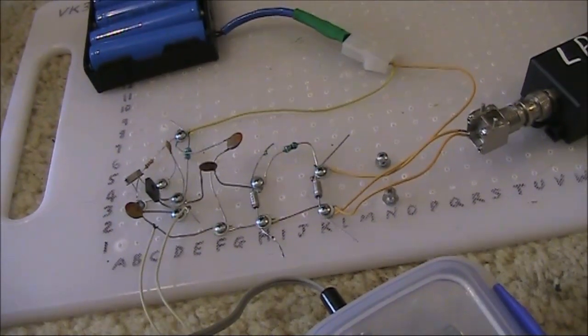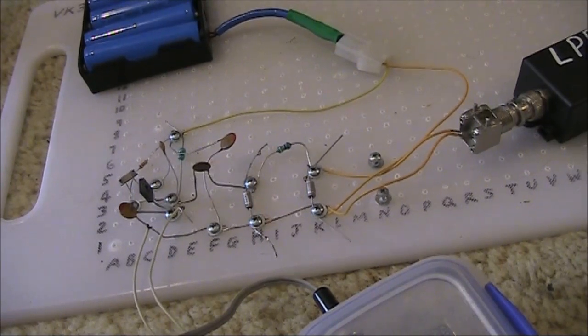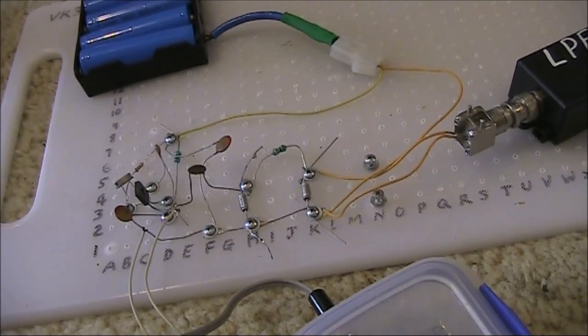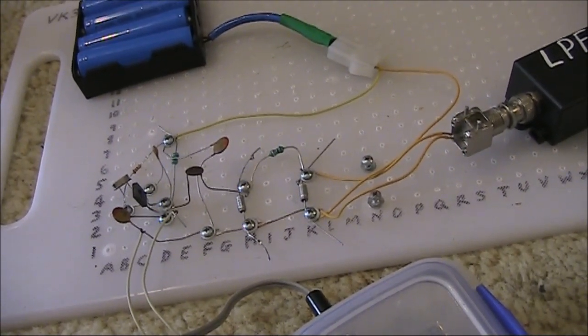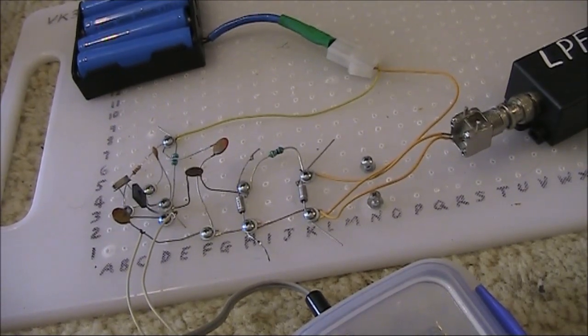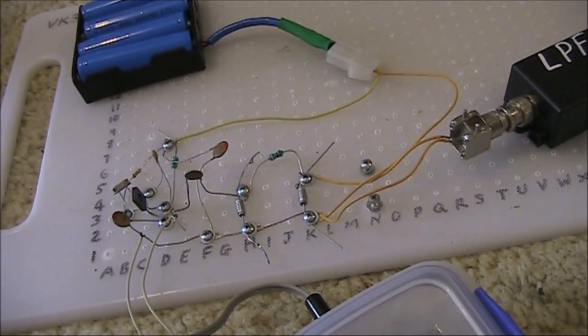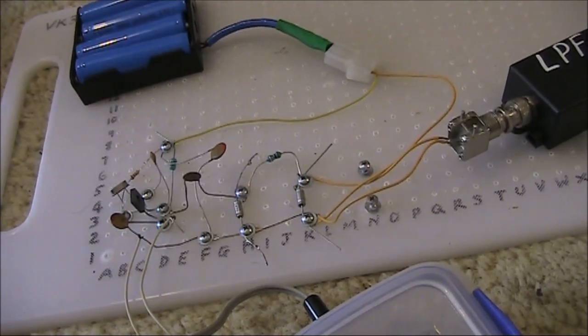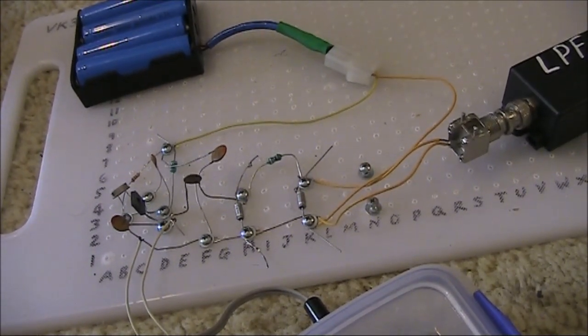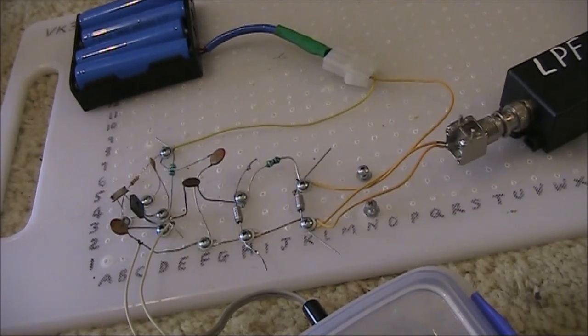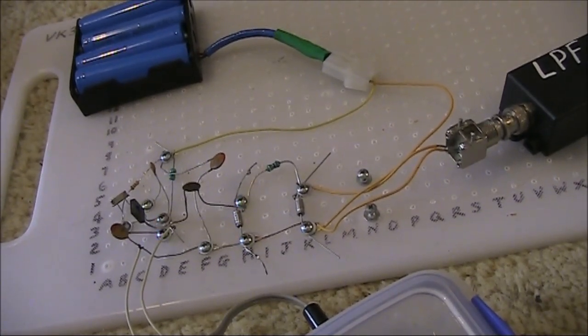That was a contact with John VK5HAA in the Adelaide Hills. He gave me a Readability 4 and Strength 4 report. The Adelaide Hills location is not too far from the location of the remote SDR that I was using to receive my signal, that being VK5ARG.